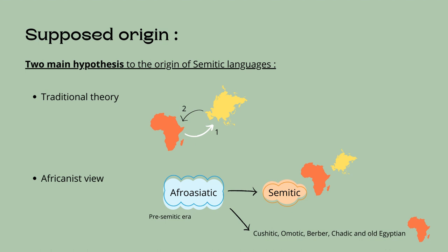Supporters of the Africanist hypothesis provide two explanations. First, among the six Afro-Asiatic subfamilies — Semitic, Cushitic, Omotic, Berber, Chadic, and Old Egyptian — only one is spoken in Asia, while all of them are spoken in Africa. Among these, three are spoken in Ethiopia: Semitic, Cushitic, and Omotic. Another reason is that more Semitic languages are spoken in Ethiopia, around 16, rather than in Asia.